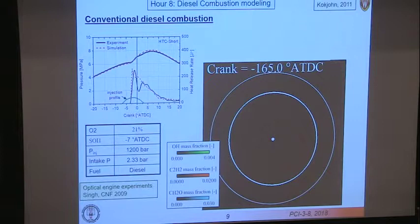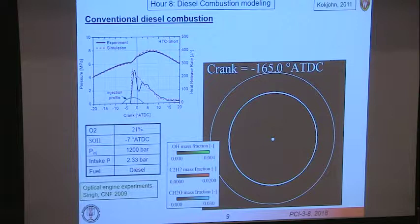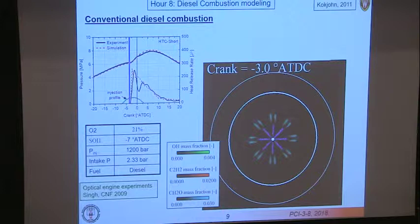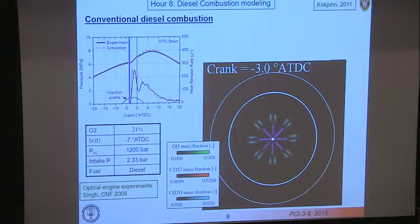Let's look first at conventional diesel combustion. We have compression, we inject the fuel — that's the green curve — and after some delay we get a premixed burn spike followed by a diffusion burn. I'm stopping here at the blue line, three degrees before top dead center. The blue is the liquid and the light blue here is formaldehyde. So we've had vaporization and we're starting to go through the low temperature pathway leading to the formation of formaldehyde by three degrees — before any major heat release occurs.